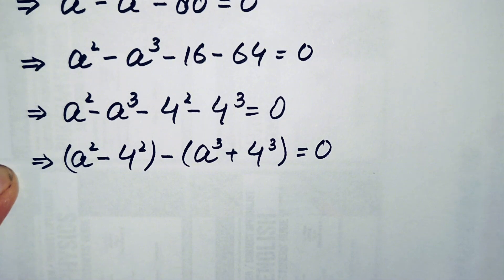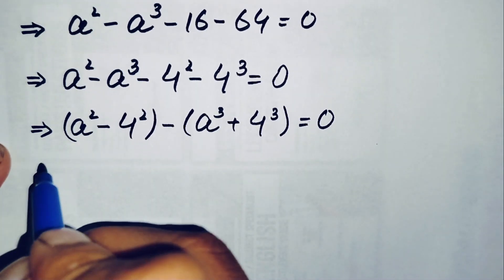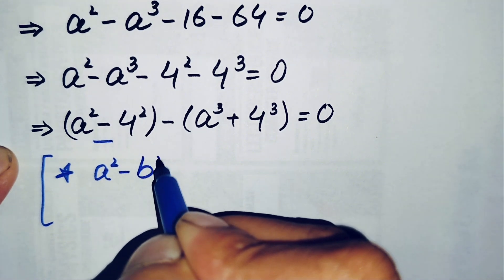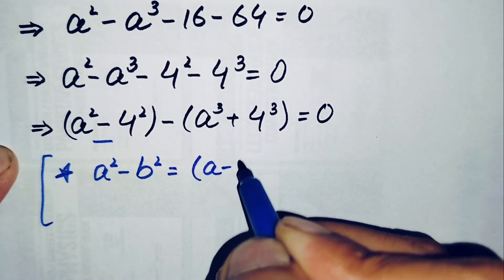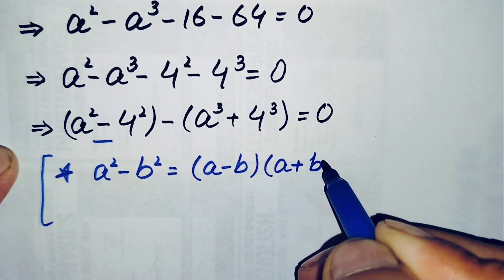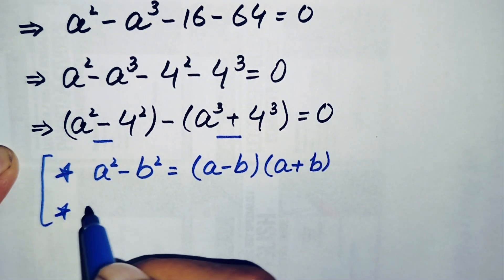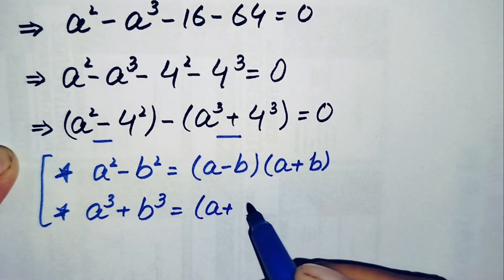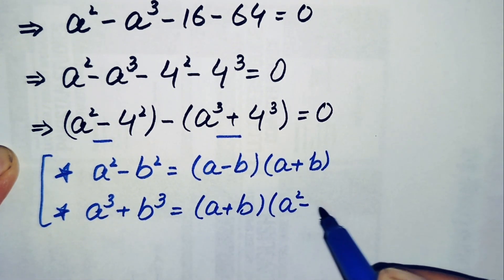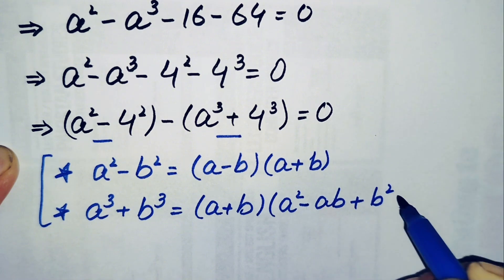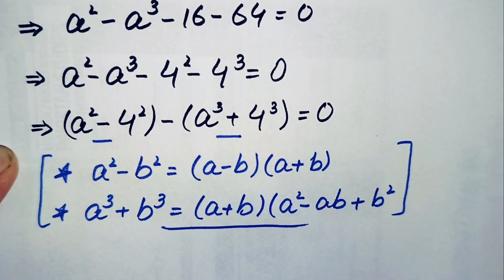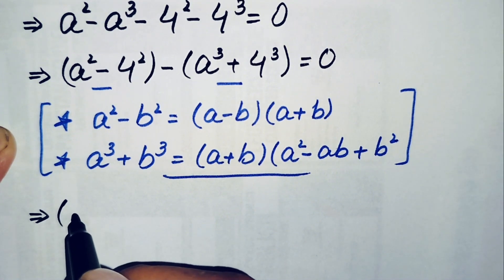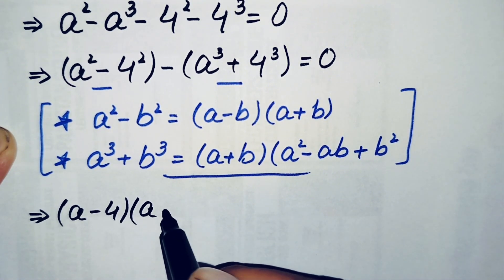Here we have two famous algebraic identities: a squared minus b squared, and a cubed plus b cubed. In the first term we will use the identity a squared minus b squared equals a minus b times a plus b. In the second term we use the cubic identity: a cubed plus b cubed equals a plus b times a squared minus ab plus b squared.